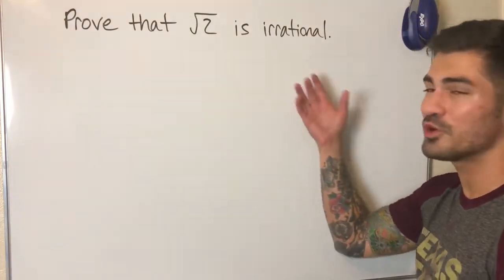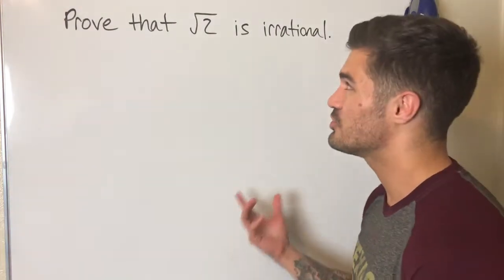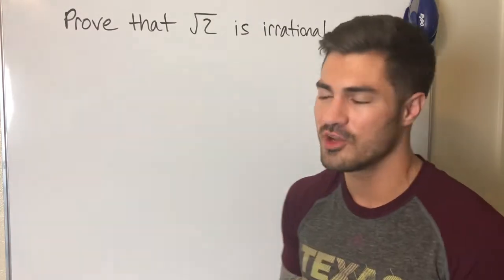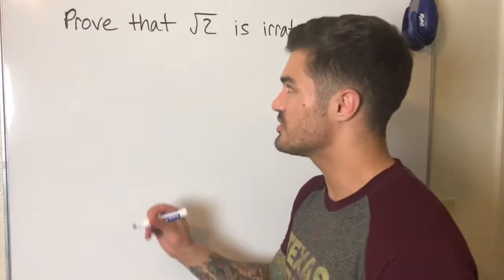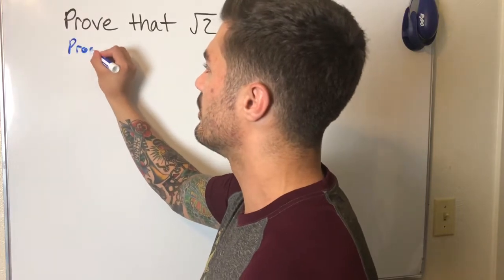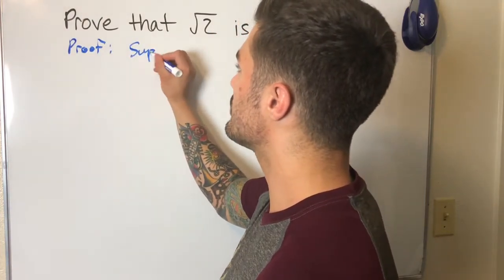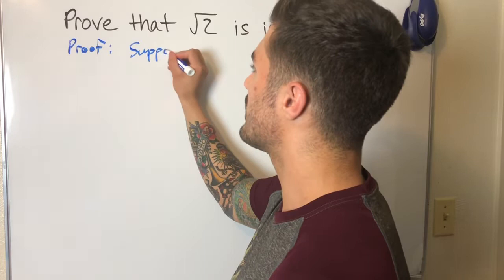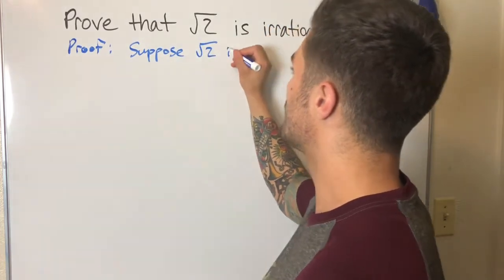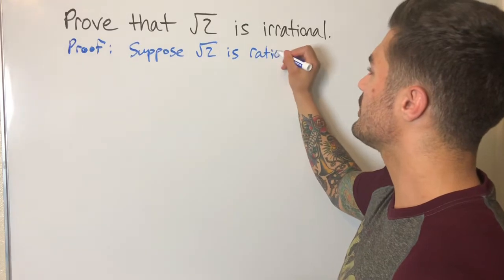So again, prove that the square root of 2 is irrational. To show that this is irrational, we're going to suppose that it's rational and then see if we can come across some contradiction. That's the first step of this proof: suppose the square root of 2 is rational.